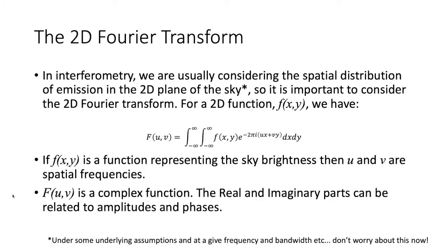So now we've got a very quick overview of what a Fourier transform is, we can talk about the one used in interferometry. Usually we are considering the spatial distribution of emission from objects in space on the two-dimensional plane of the sky. Given that we're looking at objects in a two-dimensional plane it is important for us to consider the 2D Fourier transform.